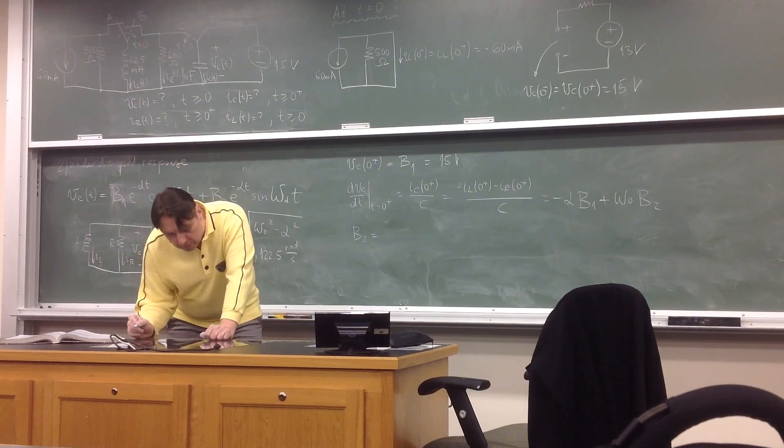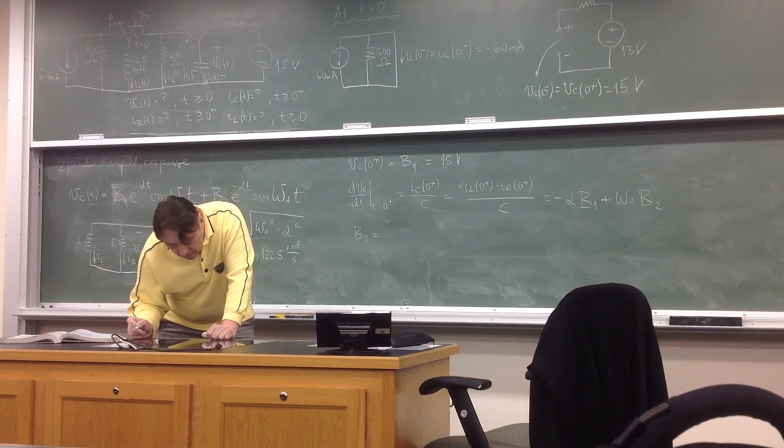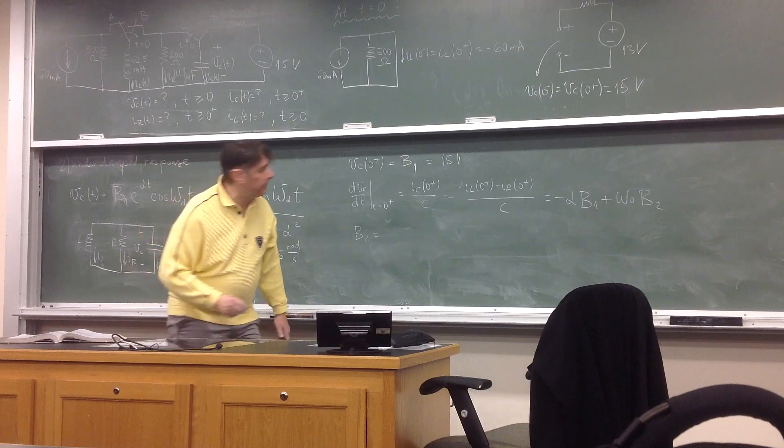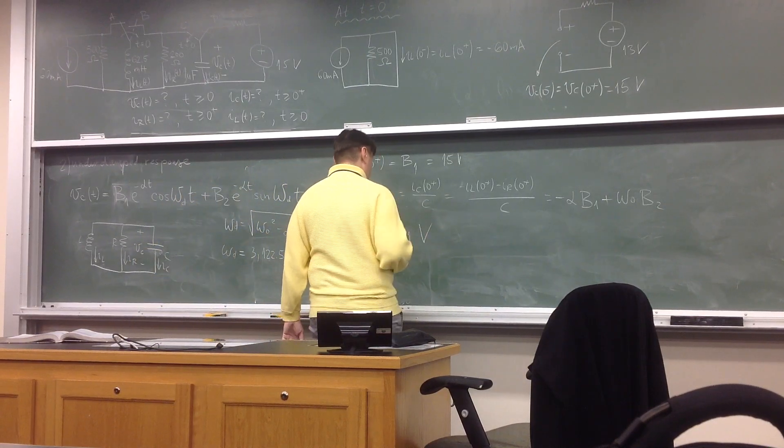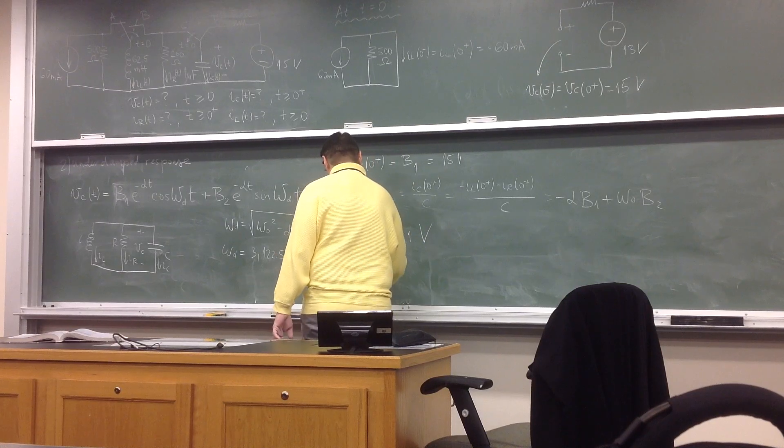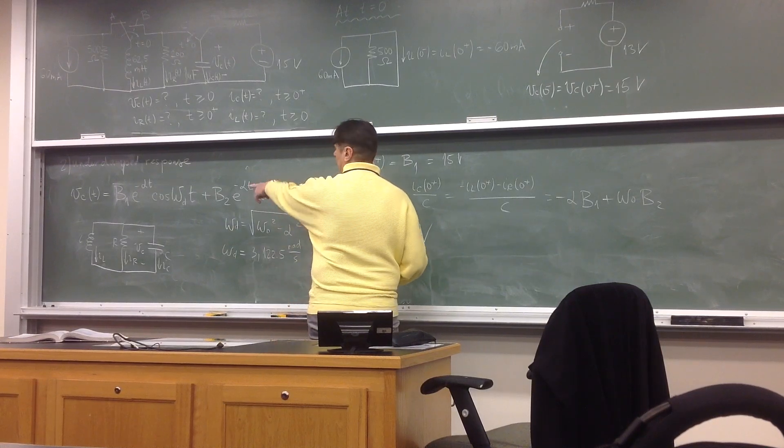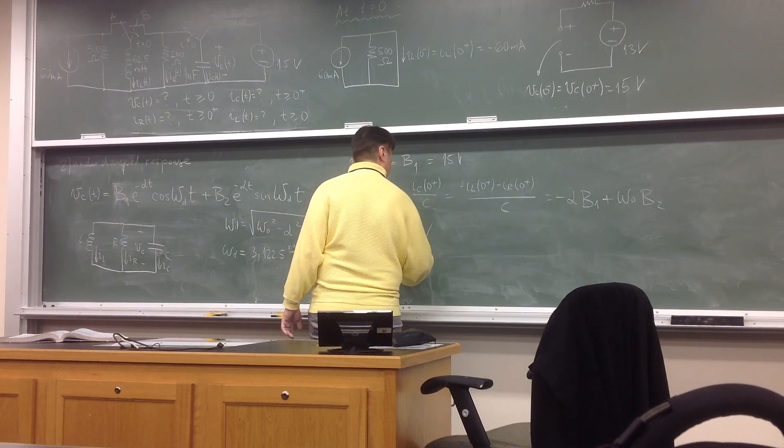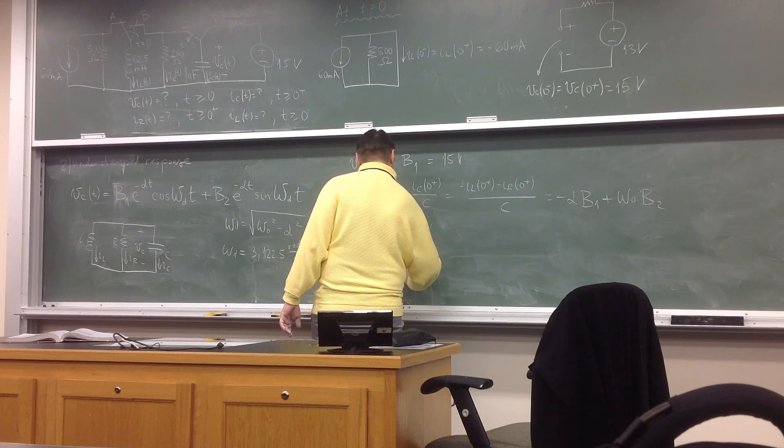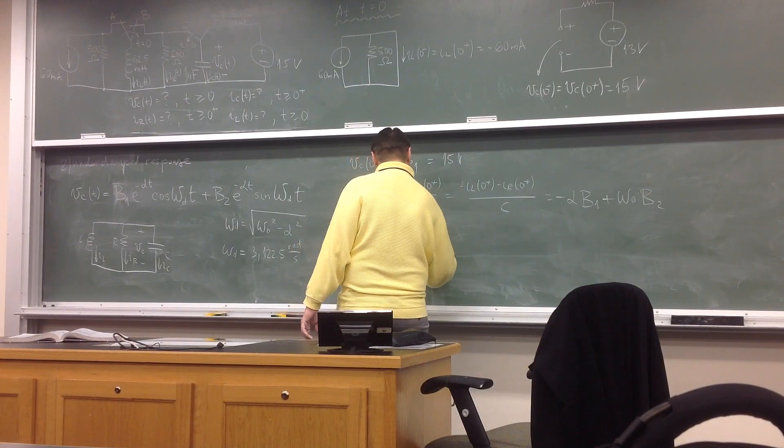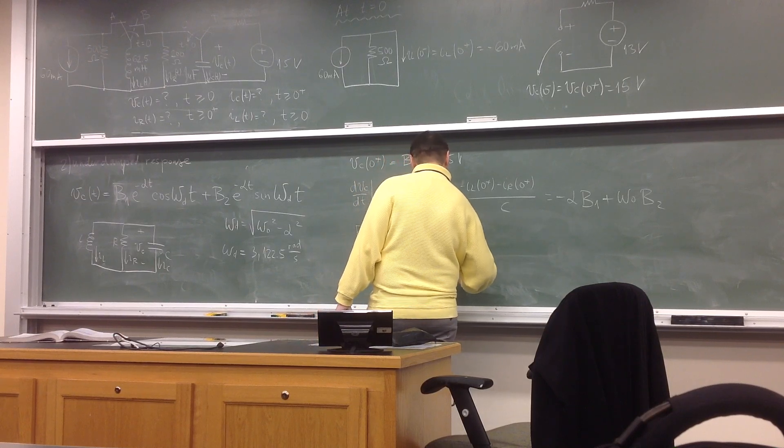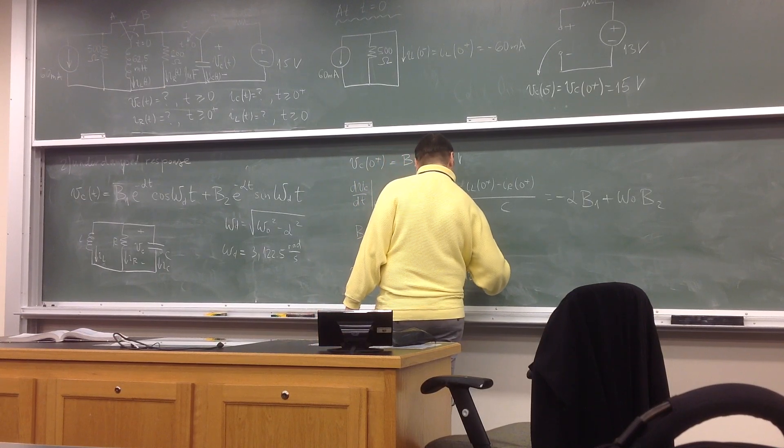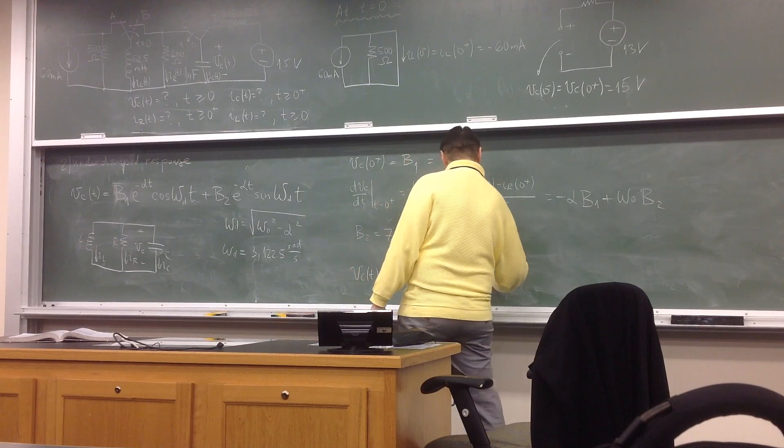Okay. So then Vc(t), you know how to do it now. There'll be 15e^(-3500t)cosine(3122.5t), right?